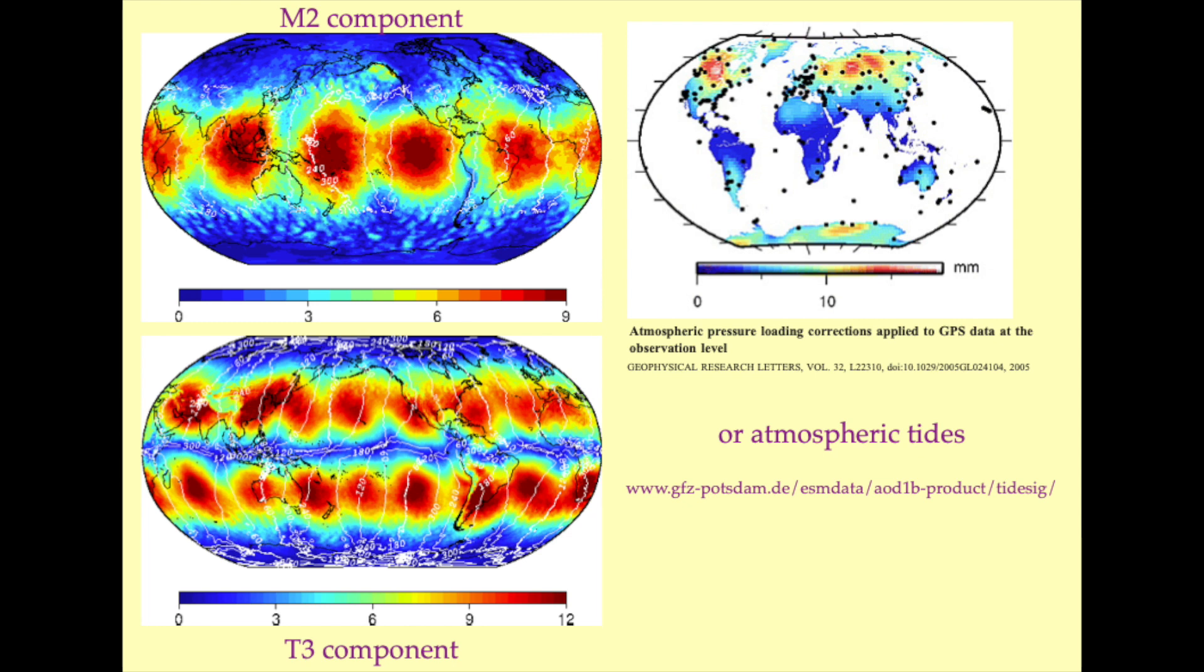I have shown here the M2 and T3 components of the atmospheric tides and the atmospheric loading correction that must be applied to GPS time series. This correction is required because tidally forced atmospheric loading applies a force to Earth's surface, which results in a surface deformation.